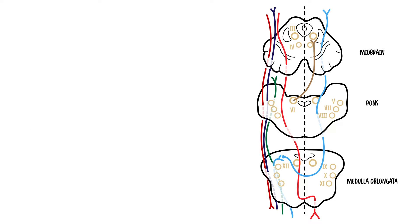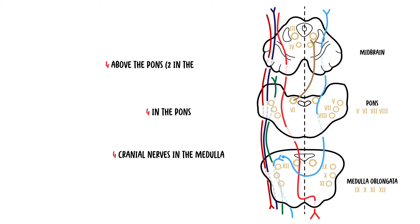The third rule is that there are four cranial nerves in the medulla (the bottom part of the brainstem), four in the pons, and four above the pons — two in the midbrain and two above. Above the pons: cranial nerves 1, 2, 3, and 4, with 3 and 4 within the midbrain. In the pons: cranial nerves 5, 6, 7, and 8. In the medulla: cranial nerves 9, 10, 11, and 12.